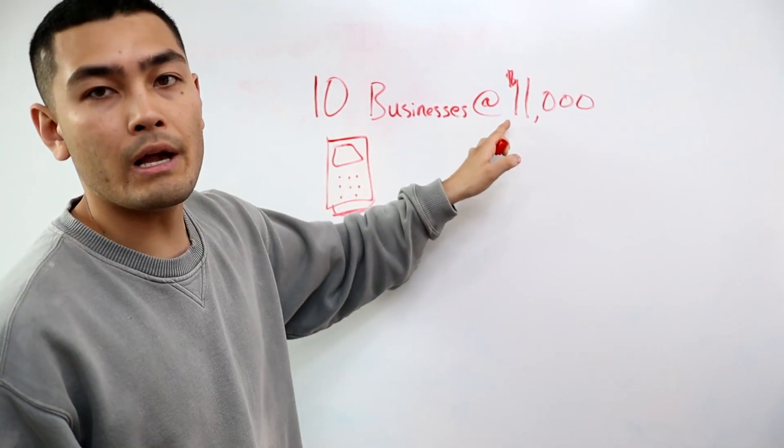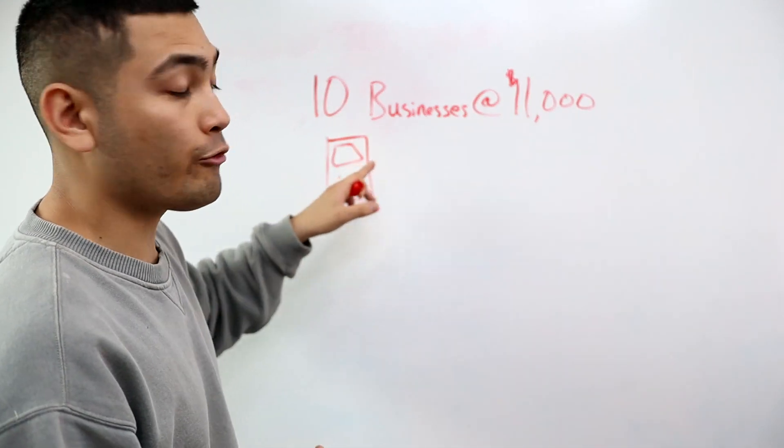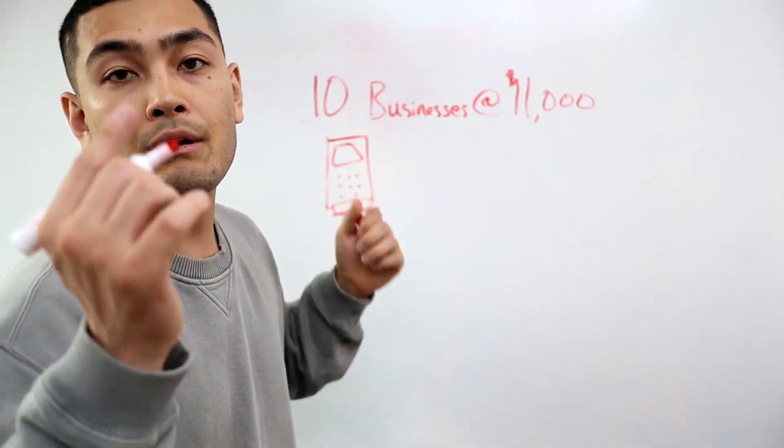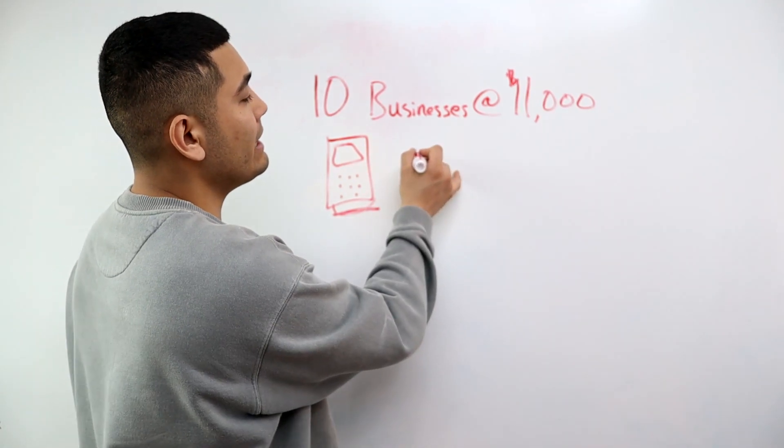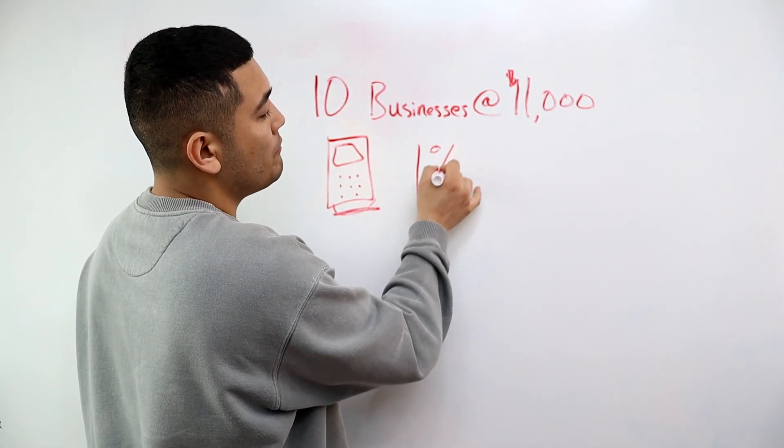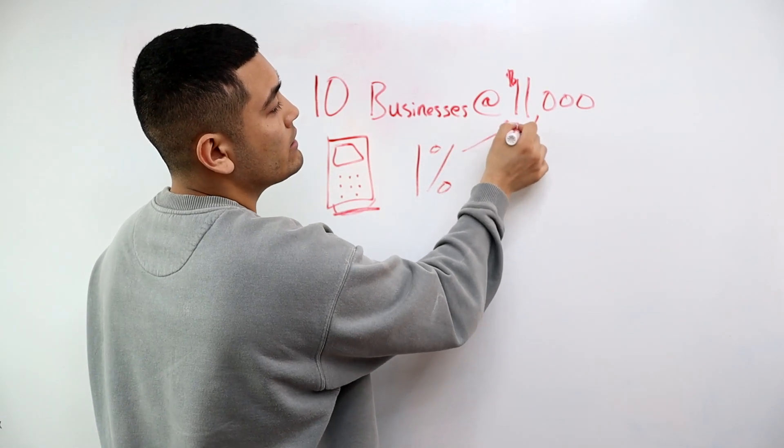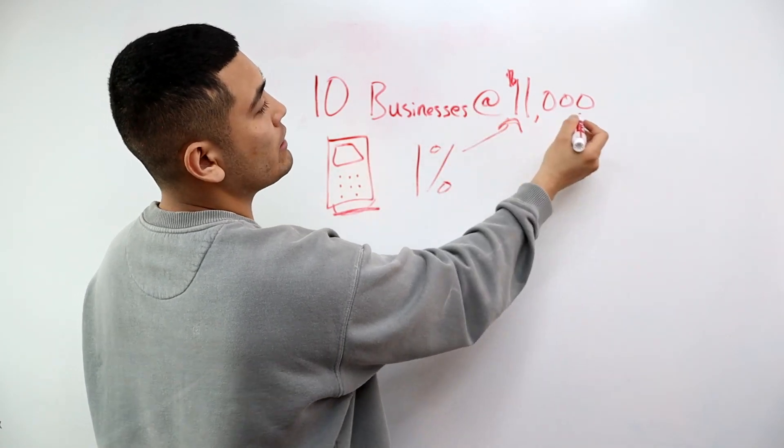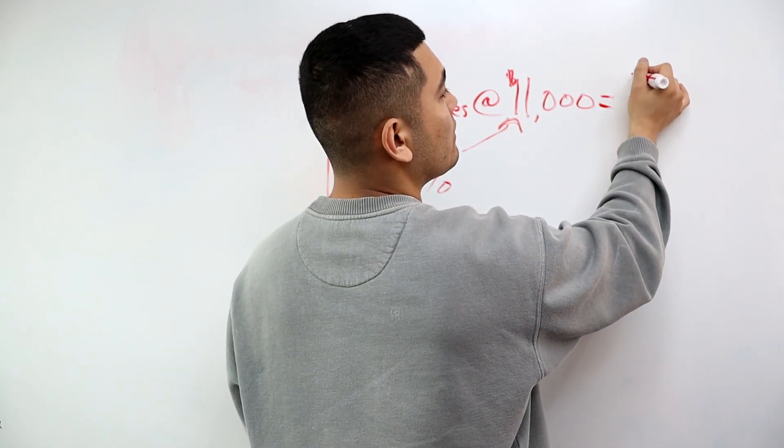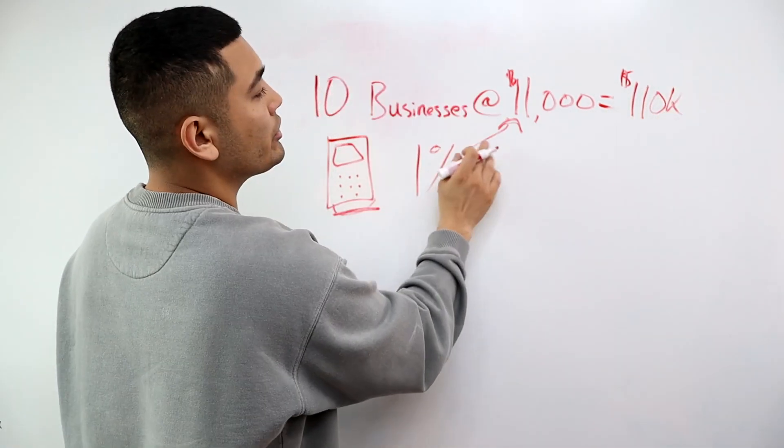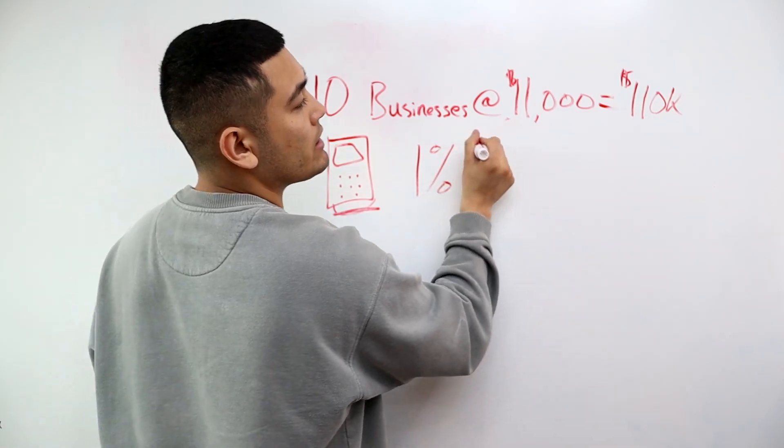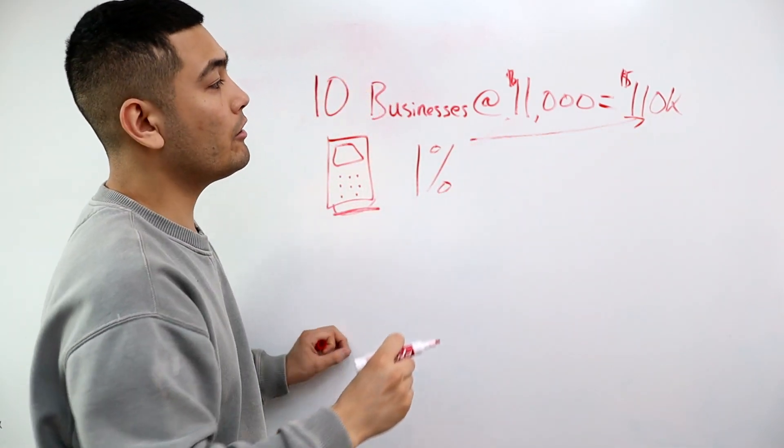So you have 10 businesses doing $11,000 per month through your credit card reader. Because you were the person who set them up with that credit card reader, in exchange you're going to get 1% of their total sales volume. This total sales volume equals $110,000, so you're going to actually get 1% of $110,000.